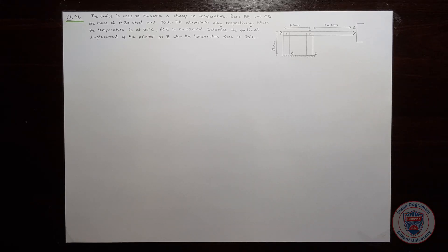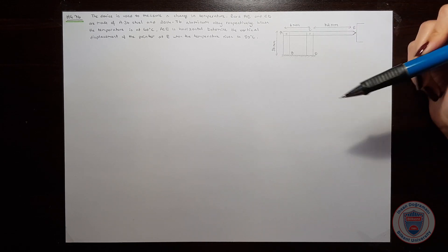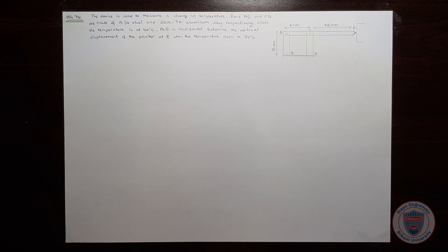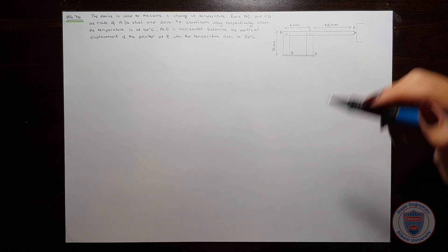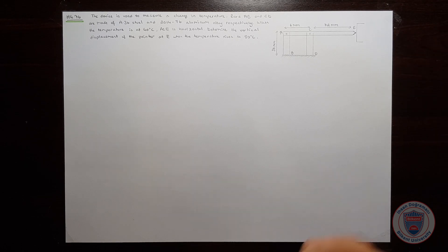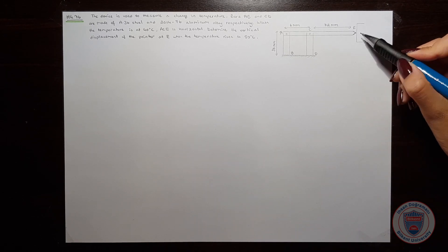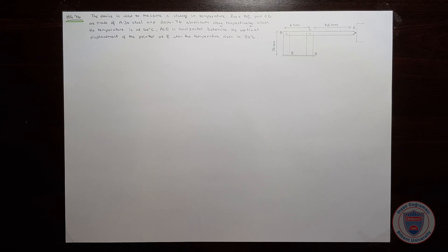This device is used to measure temperature change. We know that bar AB is made of A36 steel and bar CD is made of 2014 T6 aluminum alloy. When the temperature is 40 degrees, the ACE bar is horizontal. We would like to find the vertical displacement of the pointer E when the temperature is increased to 80 degrees.